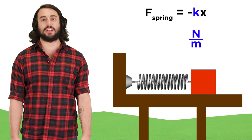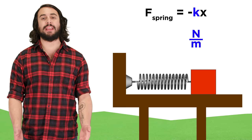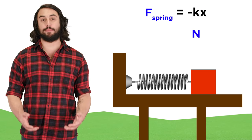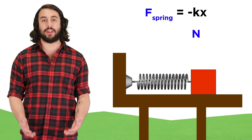The units on a spring constant will be newtons per meter, so that when you multiply by some distance x, you get the force that must be applied to compress that spring that far.